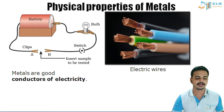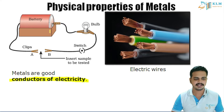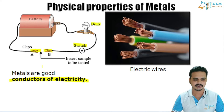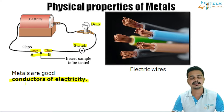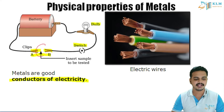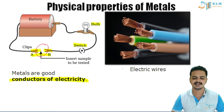Metals are also great conductors of electricity. In this experiment, we take a battery connected to a bulb with a switch and two free ends. If we connect a metal piece between the two ends instead of connecting them directly, the bulb still glows, showing metals are very good conductors of electricity. This is why all electric wires in your home are made out of copper, which is a metal.